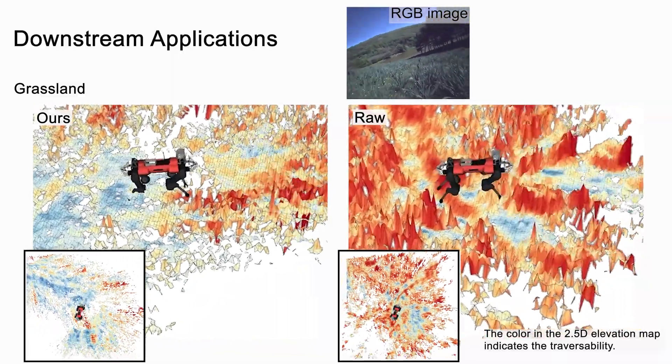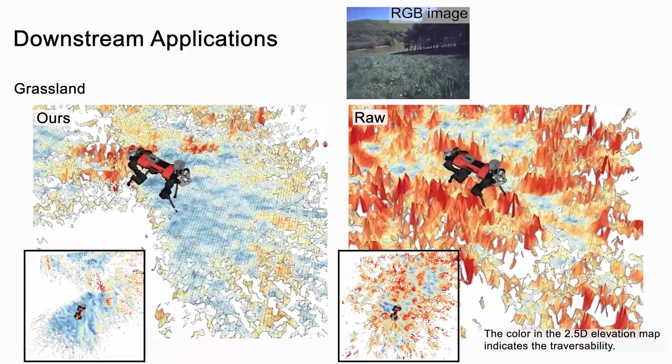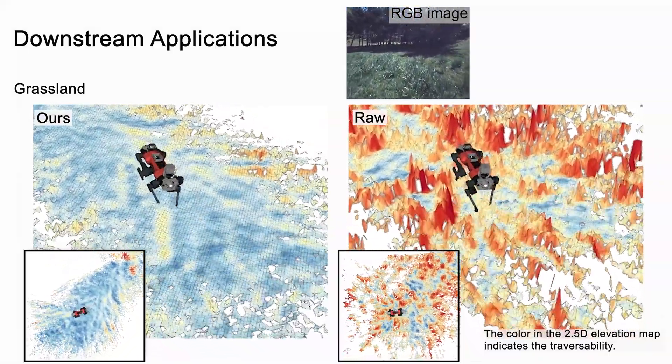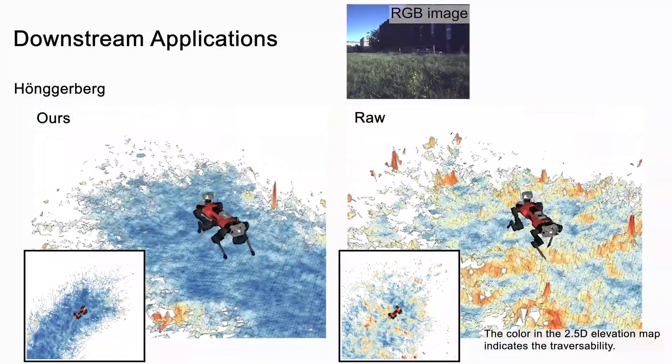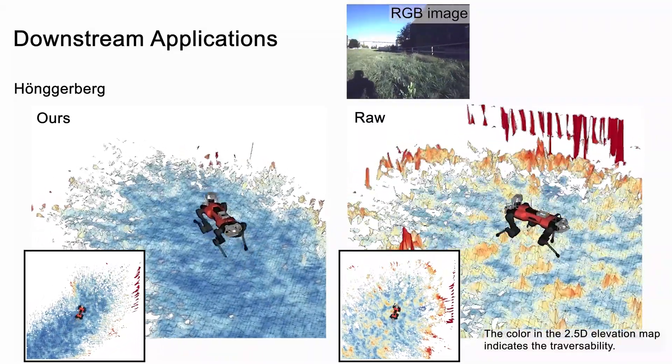Within the paper, we show that our method achieves 48% better on root mean square error compared to the baseline. The elevation map and traversability estimation built from our semantic point cloud filter can empower more outdoor environment applications, such as locomotion and navigation tasks.